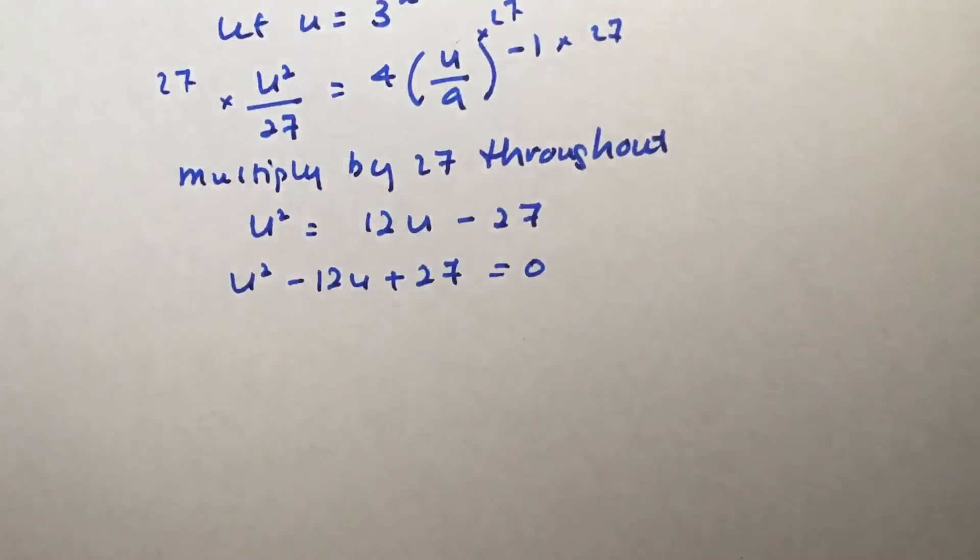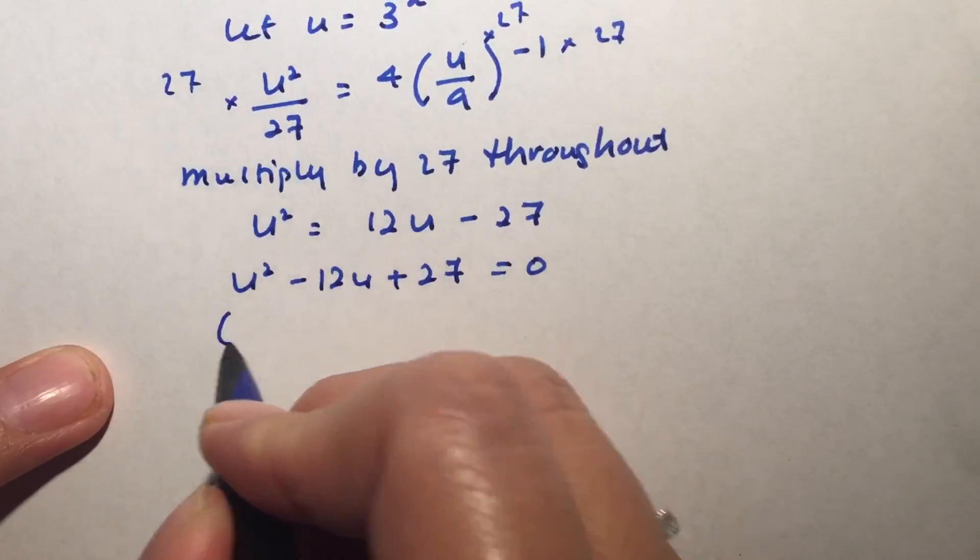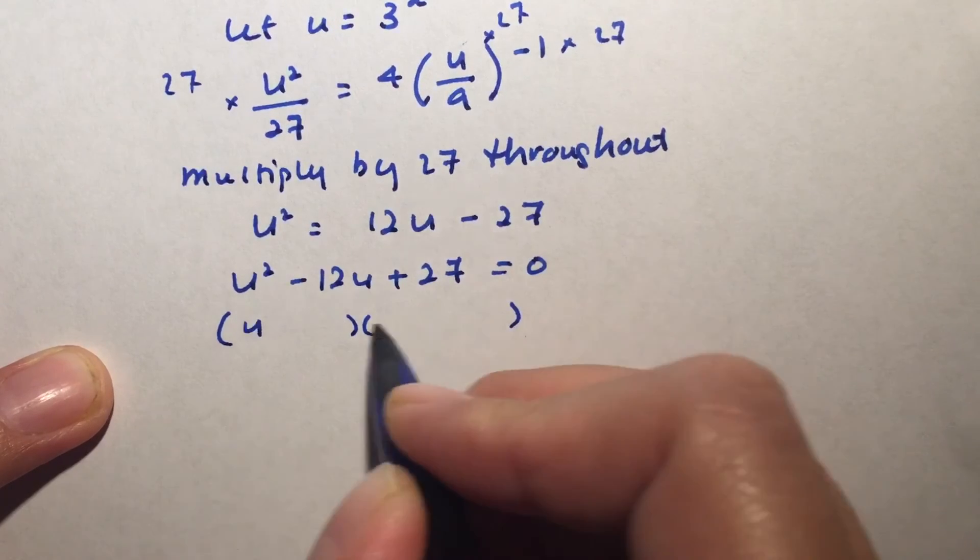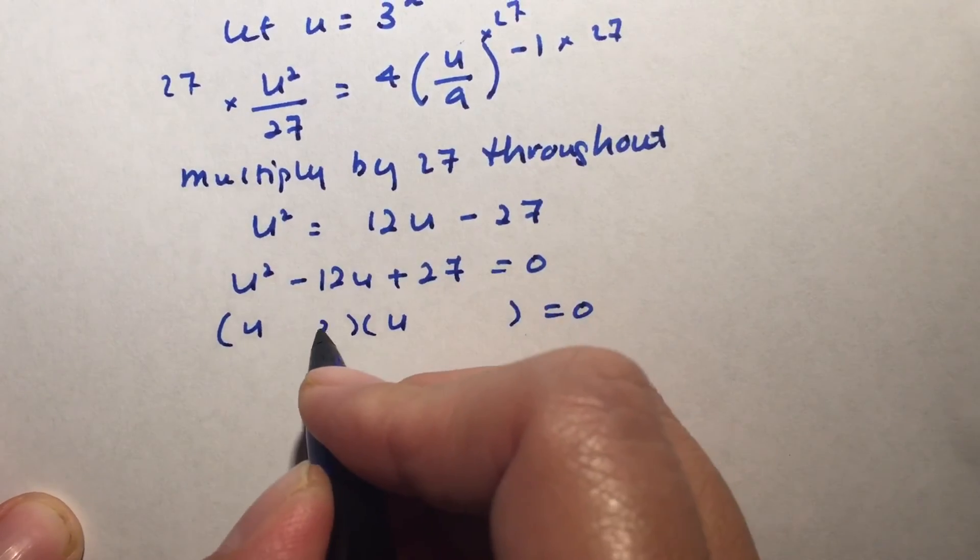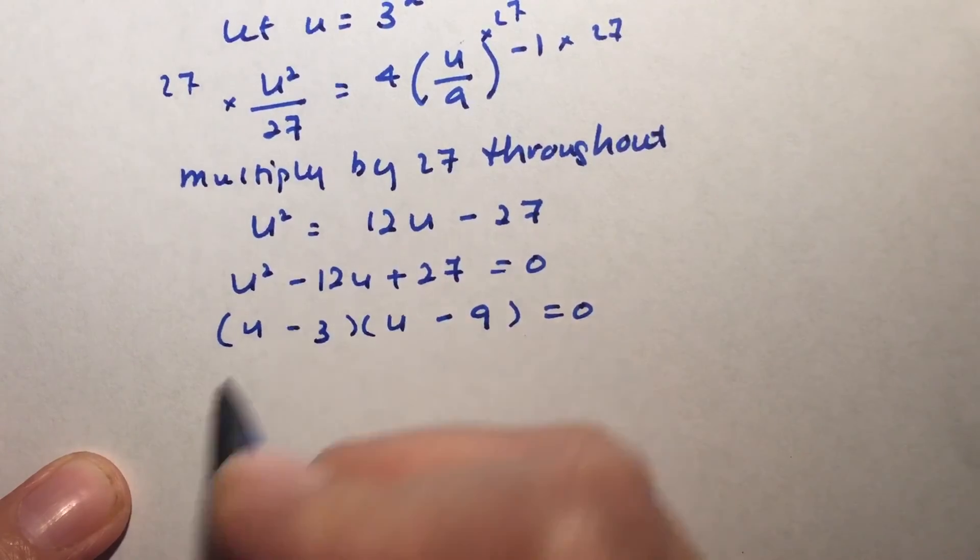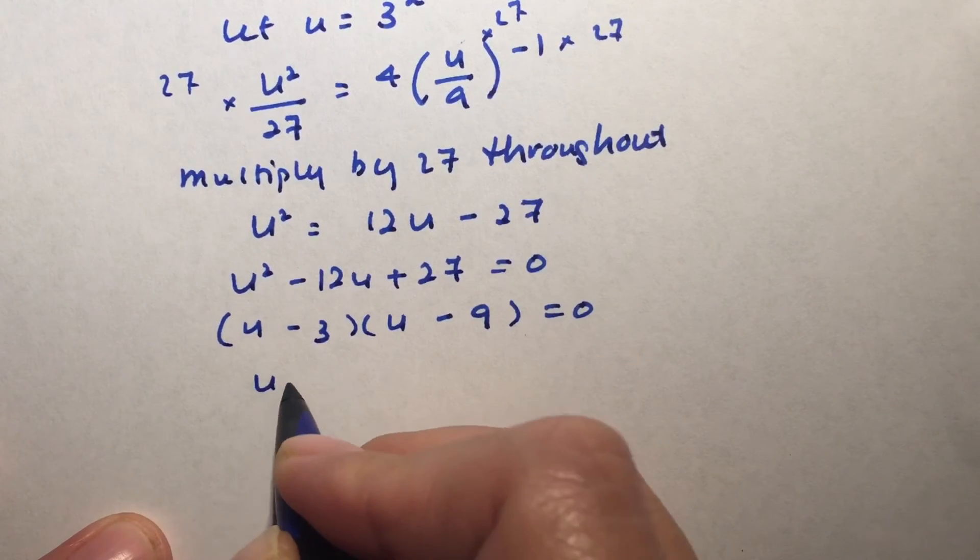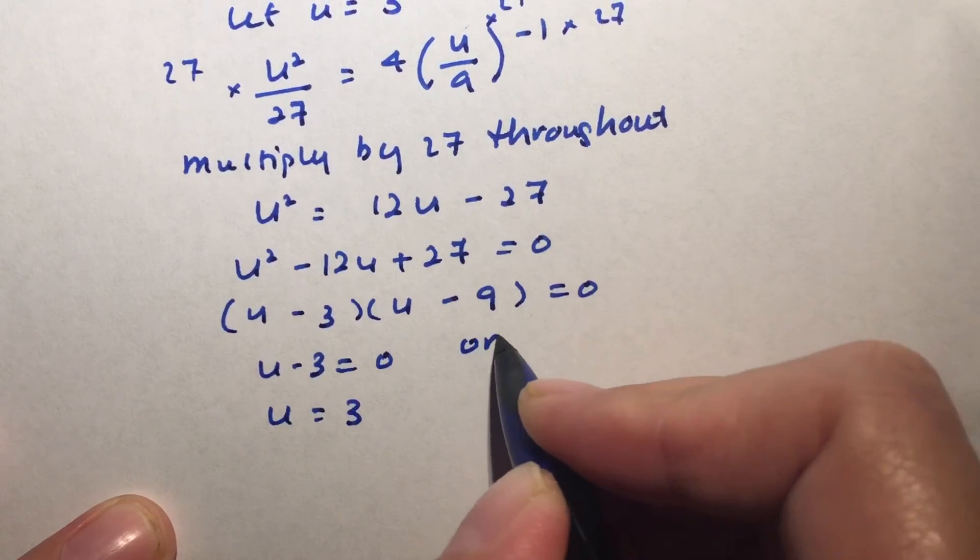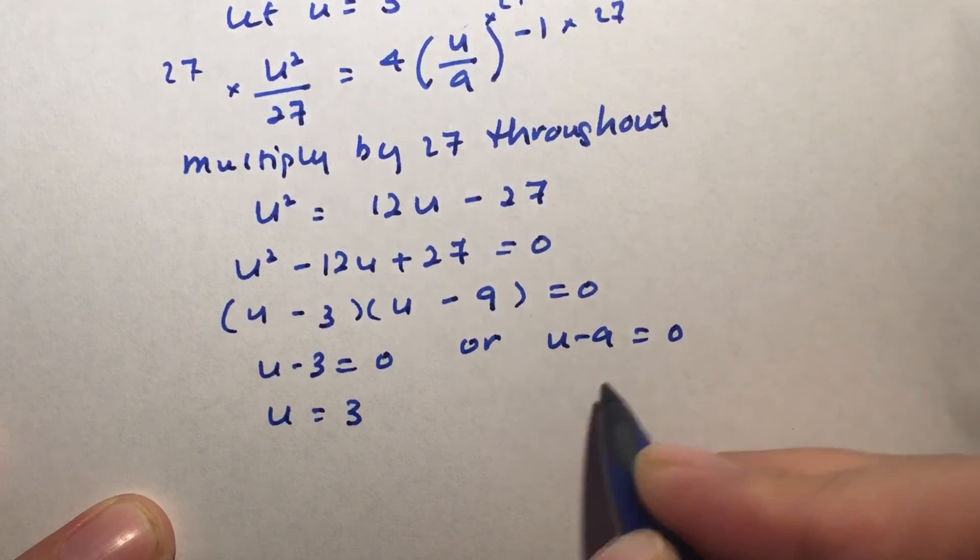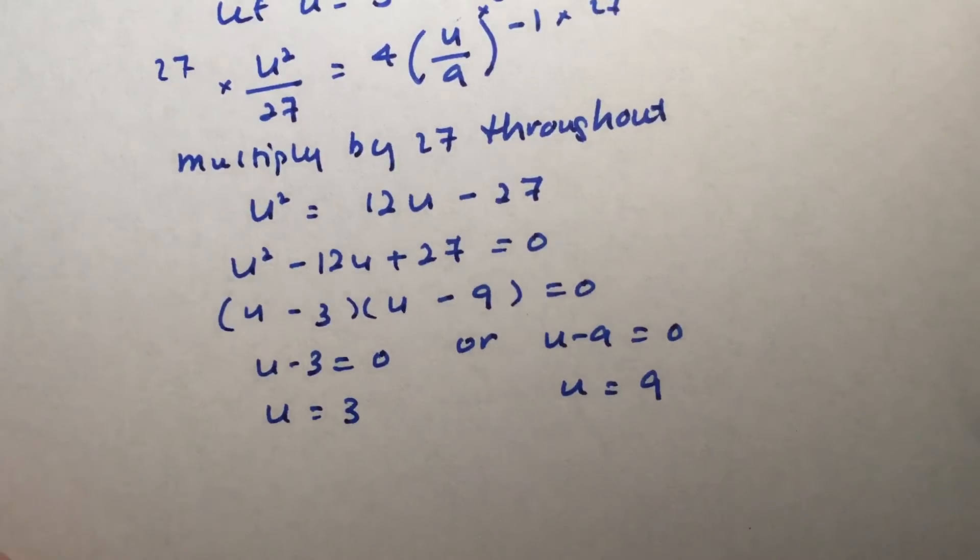And again, we will have to use your factorization. So we will be able to have u and u, and we will be able to have 3 and 9. And we are going to be able to see that u minus 3 is 0, so u can be 3. Or u minus 9 can be 0, so u can be 9.